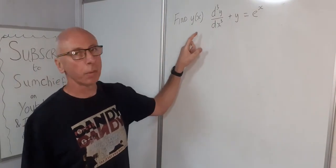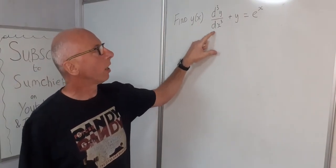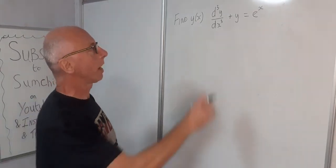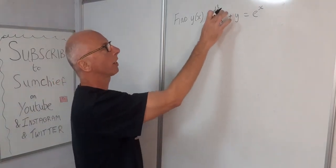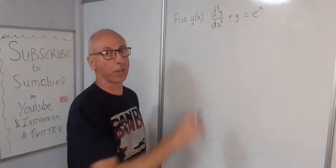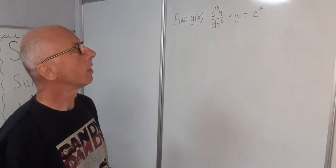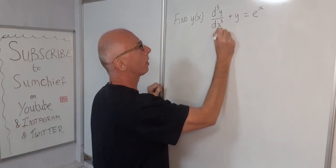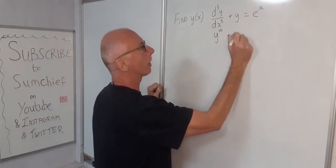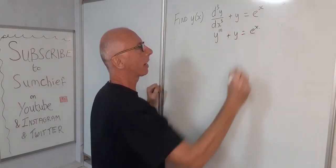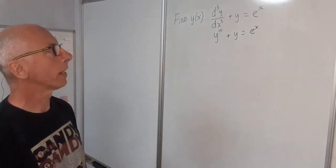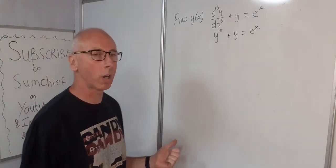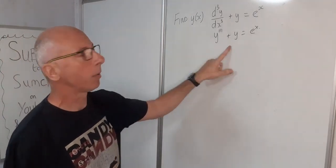Here we've got a question where we need to find y of x of this third order linear differential equation. It's third order because our derivative of y is the third derivative. So let's just rewrite this as y triple prime plus y equals e to the x. Now we're used to second order linear differential equations — we've done quite a lot of videos on those — now we're looking at the third order.